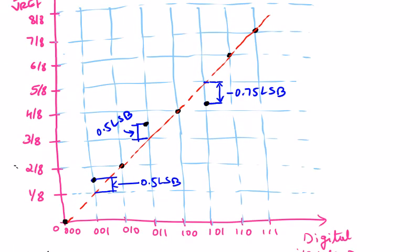Looking at the transfer curve: the black dot for input code 000 is on the reference line. For 001 and 1/8, there is no dot on the reference line — the dot is deviated by 0.5 LSB as given in the problem. For 010 and 2/8, the dot is intersected on the reference line. For 011 and 3/8, the dot should be there but it is deviated — the height is 0.5 LSB as given. For 100 and 4/8, the dot is intersected on the reference line, not deviated.